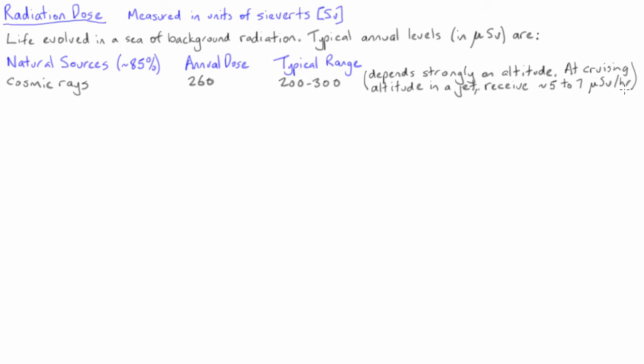In fact, at cruising altitude in an airplane, the dose rates can be as high as 5 to 7 micro-sieverts per hour, a level that is well and truly above the recommended public limit for radiation exposure. This seems like madness. Why then are you allowed to fly in a plane? Isn't it dangerous?